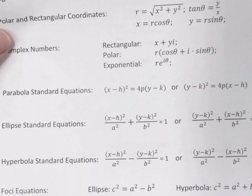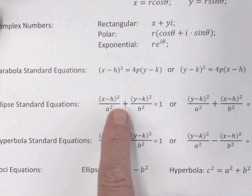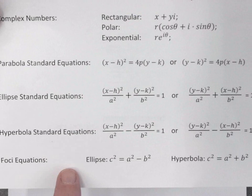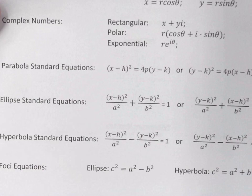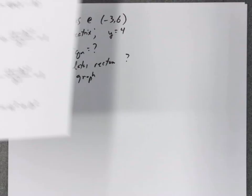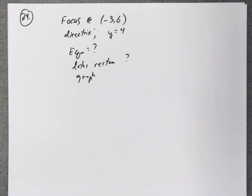So on the formula sheet we have these equations for what's called conic sections. We have two equations for parabola, two equations for ellipses, two equations for hyperbolas, and then down here at the bottom we have these equations for ellipses and hyperbolas that help us find the foci. So this is what we're going to be referring to.